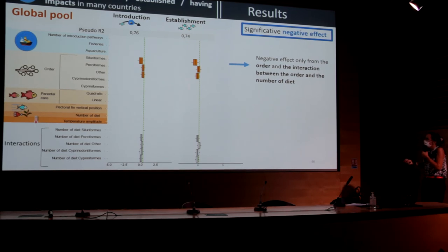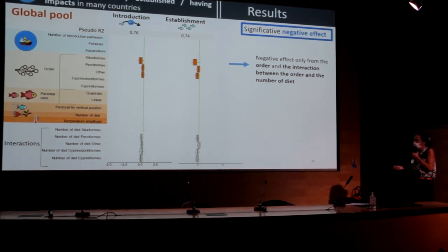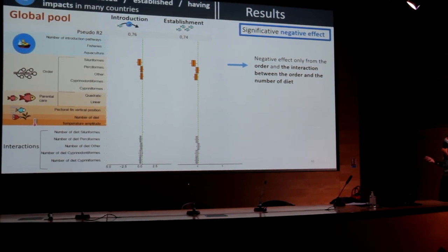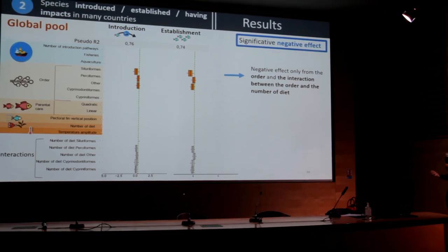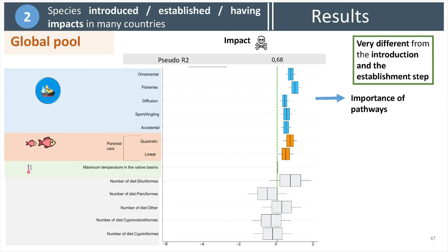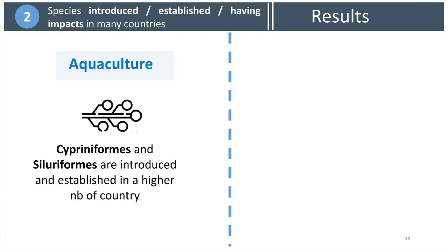Concerning negative effects, only the order and its interaction with number of diets have a negative effect on the number of countries where species are introduced or established. The impact step shows results very different from the introduction and establishment steps — again, likely due to propagule pressure. Concerning the aquaculture pathway specifically, order seems to be the most important characteristic, as Cypriniform species are introduced and established in a higher number of countries, corresponding to the main orders used in aquaculture.